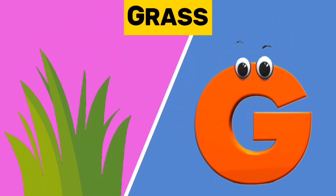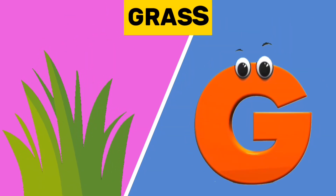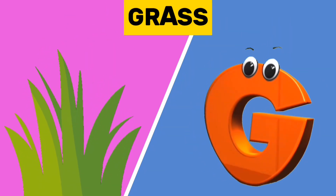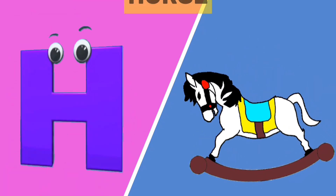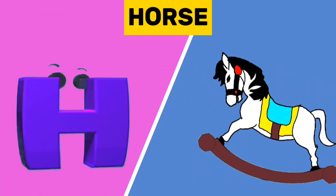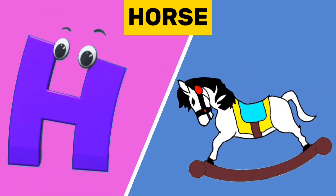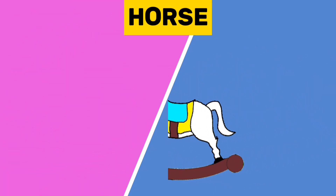G is for grass. G, g. Grass. H is for horse. H, h. Horse.